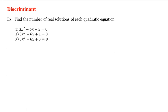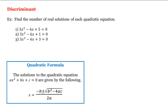Let's learn about the discriminant and find the number of real solutions of each of three quadratic equations. Recall the quadratic formula: for ax² + bx + c = 0, the solutions are x = (−b ± √(b²−4ac)) / 2a. Here we're not asked to find the solutions, but rather the number of real solutions. The quantity under the square root — b²−4ac — is what determines that, and it's called the discriminant.